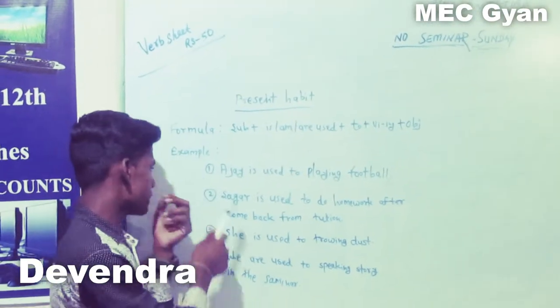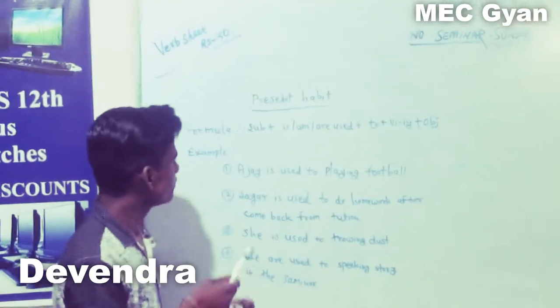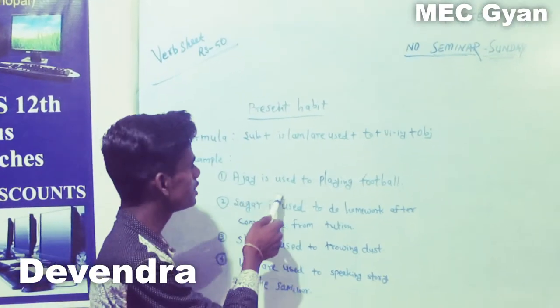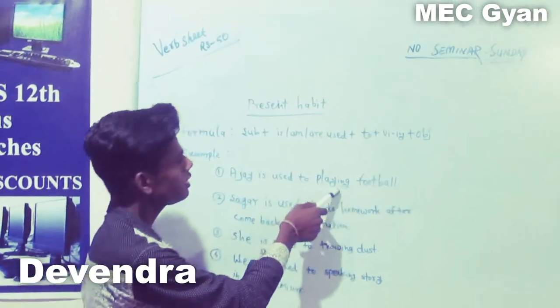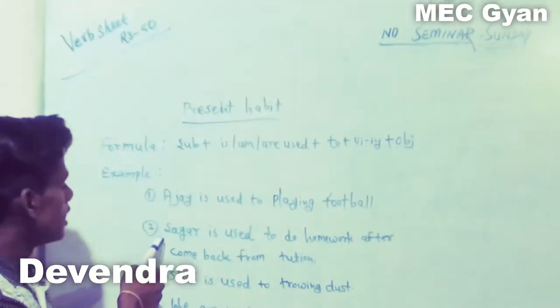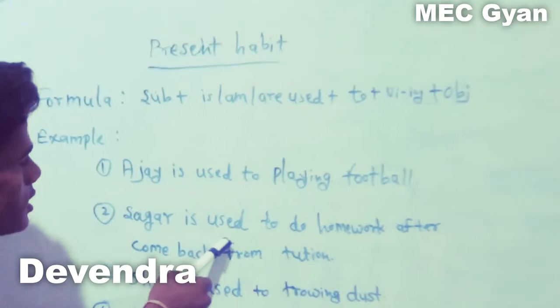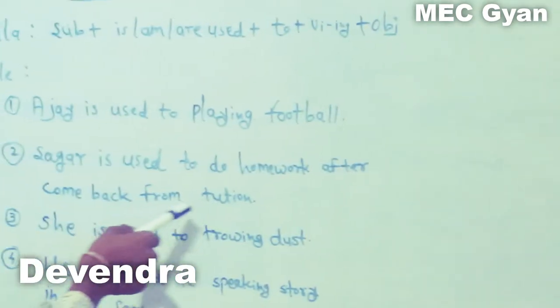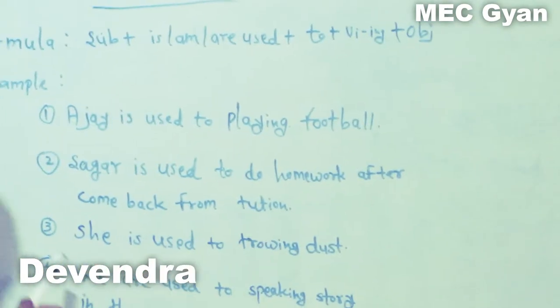Some examples are here. First: Ajay is used to playing football. Second: Sagar is used to doing homework after coming back from tuition.